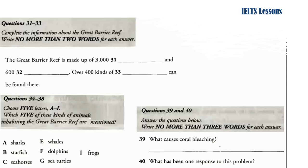Unfortunately, this wondrous area of the world is threatened by climate change. Rising sea temperatures have led to an effect called coral bleaching — that is, large numbers of corals dying off, especially in the shallower areas of the reef. The Great Barrier Reef Marine Park Authority is attempting to find effective ways to deal with this issue. One proposed solution involves shading the reef in certain areas to help keep the surrounding water temperatures down. That is the end of Section 4. You now have half a minute to check your answers.